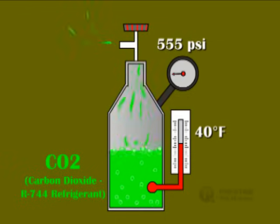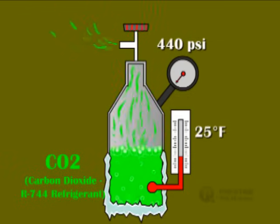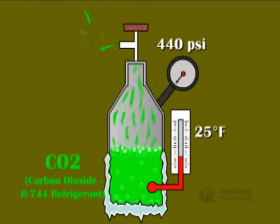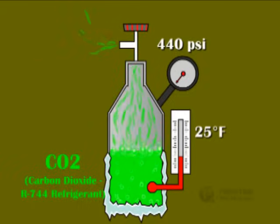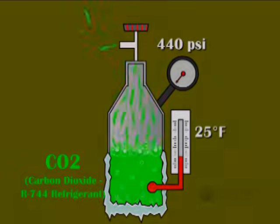We can control this boiling point by altering the pressure placed upon the liquid. Now, let's take a look at the operation of a common split-system air source heat pump.